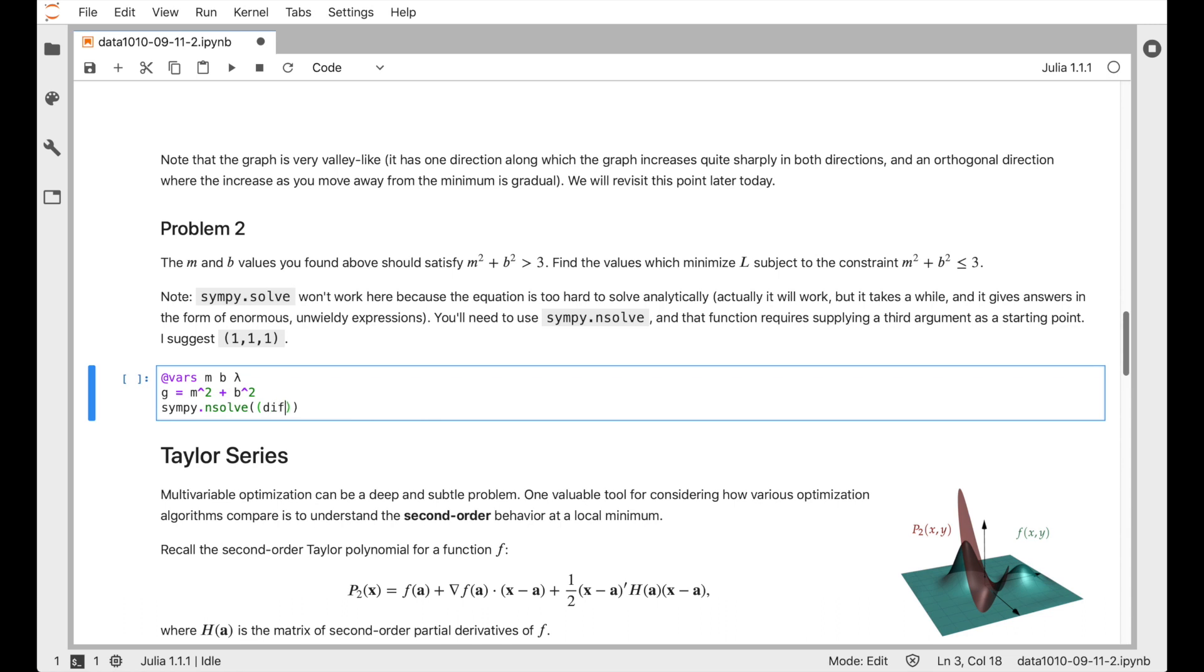And the equation we want to solve is that the derivative of L with respect to b, so the derivative of the objective function, is equal to lambda times the derivative of the constraint function. So that's true in the b coordinate, but we also need that equation to hold with respect to the m coordinate as well. And now we have three variables, m, b, and lambda in two equations, so we need another equation if we expect there to be a unique solution. And we remember that in fact g needs to be equal to 3, so we do g minus 3 there.